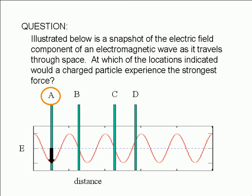The troughs are the lowest points in the wave. The crests are the highest points. At the nodes where the electric field is zero, as in points B and C, the charged particle will feel no force.